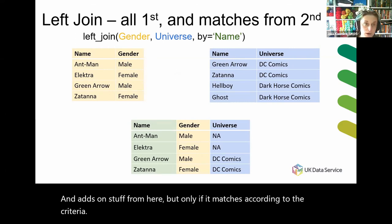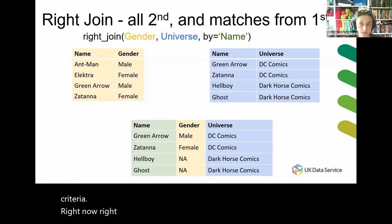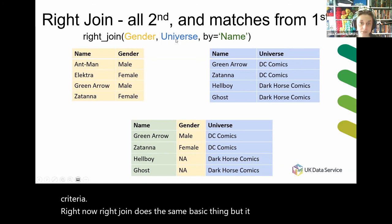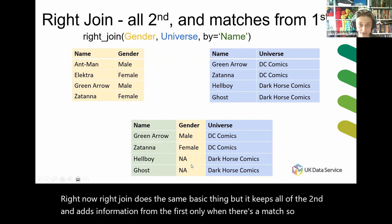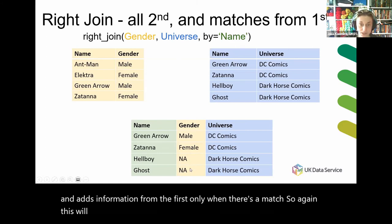A right join does the same basic thing but it keeps all of the second and adds information from the first only when there's a match. So again this will introduce missing variables, but they will be in a different place.